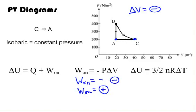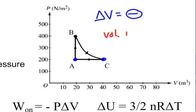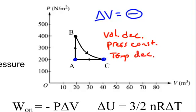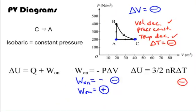Let's look at what happened to temperature. Volume went down while pressure stayed constant — by Charles' Law, temperature must also decrease. When temperature goes up, volume goes up; when it goes down, volume goes down — think of a hot air balloon. So the change in temperature is negative, which means delta U — from three-halves NR delta T — is also a negative number.